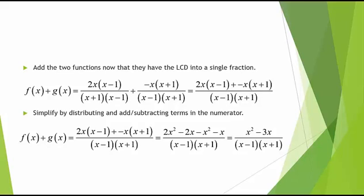We simplify 2x times x minus 1, plus negative x times x plus 1. So 2x times x minus 1 becomes 2x squared minus 2x, plus negative x times x gives us negative x squared, and negative x times 1 gives us negative x. In the numerator we have 2x squared minus 2x minus x squared minus x, divided by x minus 1 times x plus 1. This equals x squared minus 3x in the numerator, since 2x squared minus x squared gives us x squared, and negative 2x minus x gives us negative 3x.